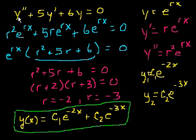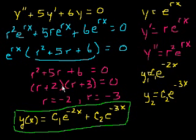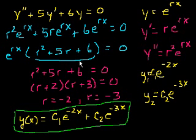In the last video, we had this second-order linear homogeneous differential equation, and we just tried out the solution y equals e to the rx. We figured out that it works for particular r's — those r's were minus 2 and minus 3 — which came out of factoring the characteristic equation. We ended up with a general solution for this differential equation.